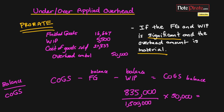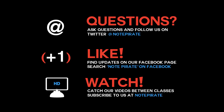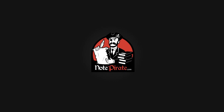One last thing: if the overhead was over applied instead of under applied, you would simply reverse all the entries — debit overhead control, and credit finished goods, work in process, and cost of goods sold. The entries shown were for under applied; over applied is just the opposite. If you have any questions, leave them in the comments, tweet us at Note Pirate, or like us on Facebook. Thanks for watching!